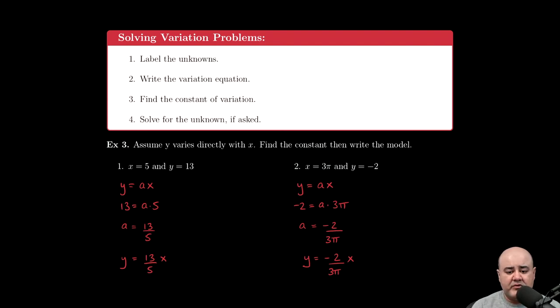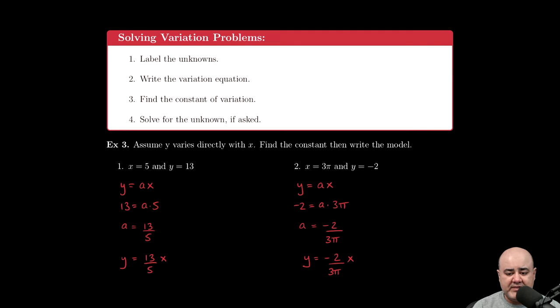In example three, we're asked to assume that y varies directly with x, so the relationship is going to be y equals a times x, where a is some constant. This is actually one of the nicer questions in that the instructions are written out. We're asked to find the constant of variation and then write down what the model itself would be.